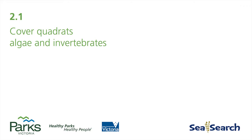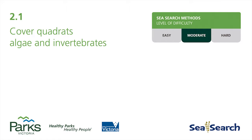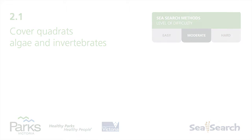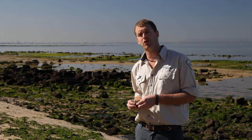SeaSearch 2.1 Cover quadrats, algae and invertebrates. Difficulty moderate. Algae and invertebrates are habitat forming species. By monitoring their cover and abundance we get an idea of the health of the rocky reef habitat.